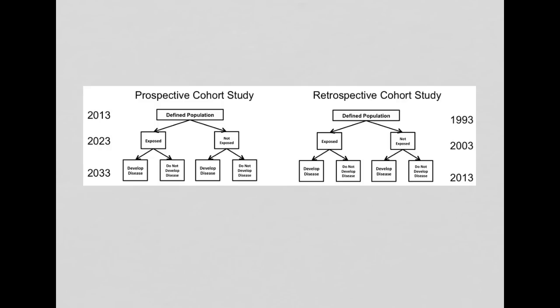So the difference between these is that the researcher begins both of these studies in 2013, initiates the study in 2013. So in this one, the participants have not yet developed the disease. And so this is a prospective cohort study. This is the one we've been talking about.